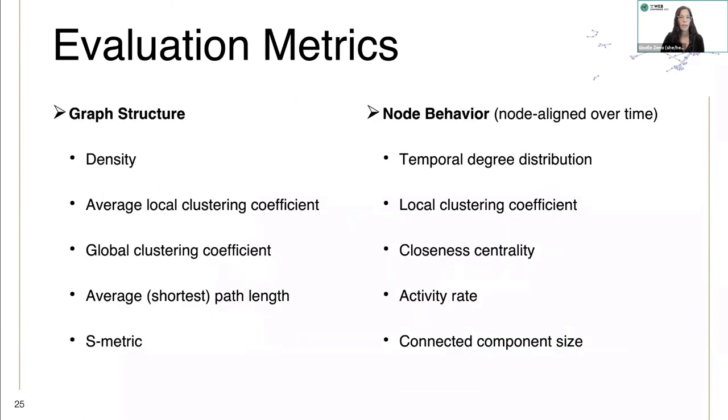These are the sets of metrics that we use to evaluate. Within the graph structure metrics, the S-metric measures the extent to which a graph has a block structure. And then in our node behavior metrics, the temporal degree distribution, we're taking the set of degrees for a node over all the graph snapshots. And then the activity rate, we're measuring how often it participates in an edge.